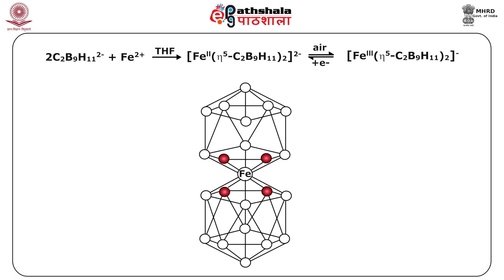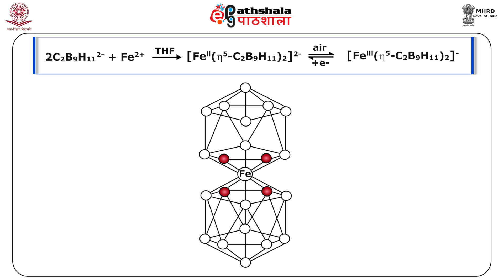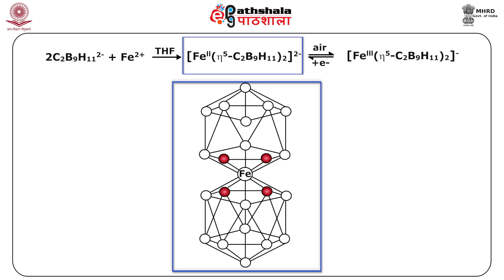This is shown in figure 2: 2C2B9H11(2-) plus Fe(2+) in tetrahydrofuran gives Fe(eta5-C2B9H11)2(2-), which in the presence of air gives the Fe(eta5-C2B9H11)2(-) complex. Figure 2 shows the pink sandwich type complex of Fe(2+) metal.